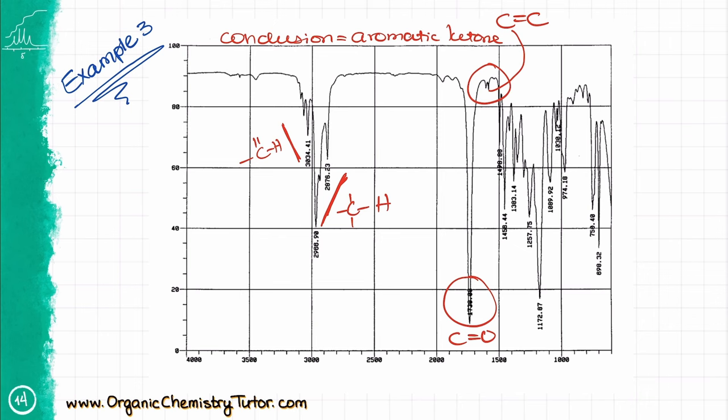So normally, the IR will be the first step in your spectroscopic determination of a compound, and you'll be able to come up with the complete structure using the combination of the IR, NMR, and maybe some other techniques.